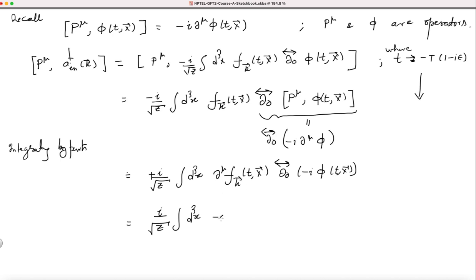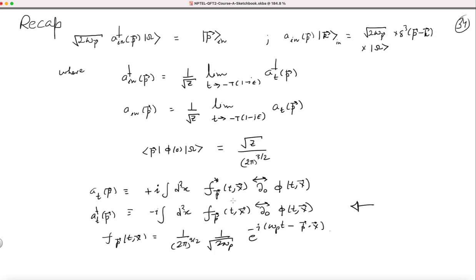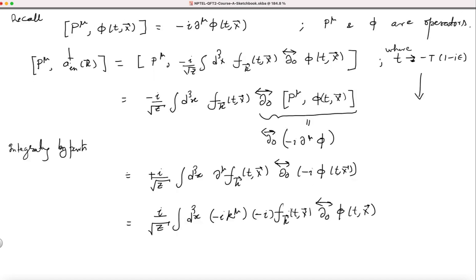This derivative del_mu acting on f_k generates a factor of -ik_mu, so we get: (i / sqrt(Z)) times (-ik_mu) times f_k times the time-derivative acting on phi. The factors of i and -i combine to give +k_mu. Looking back at the definition of a_t†(p) — it was (-i) d^3x f times (time-derivative phi) — this is exactly what we have here, with the factor of 1/sqrt(Z) included.